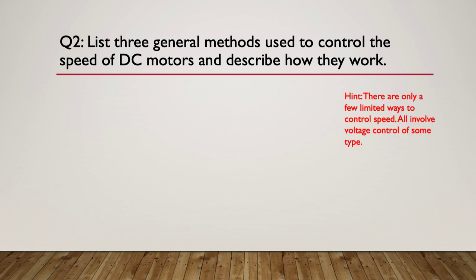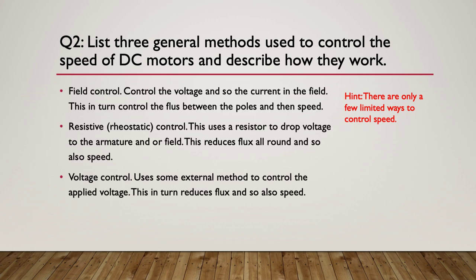There are only a few limited ways we can control the speed of a DC motor, and they all involve some kind of voltage control which then controls the current. You can use field control — control the voltage and so the current in the field, which in turn controls the flux between the poles and then the speed. Resistive or rheostatic control uses a resistor to drop voltage to the armature and/or to the field, reducing the flux and so the speed. Or straight voltage control — use some external method to control the actual applied voltage, which in turn reduces the flux and also reduces the speed. So the three are field control, resistive, and voltage control.